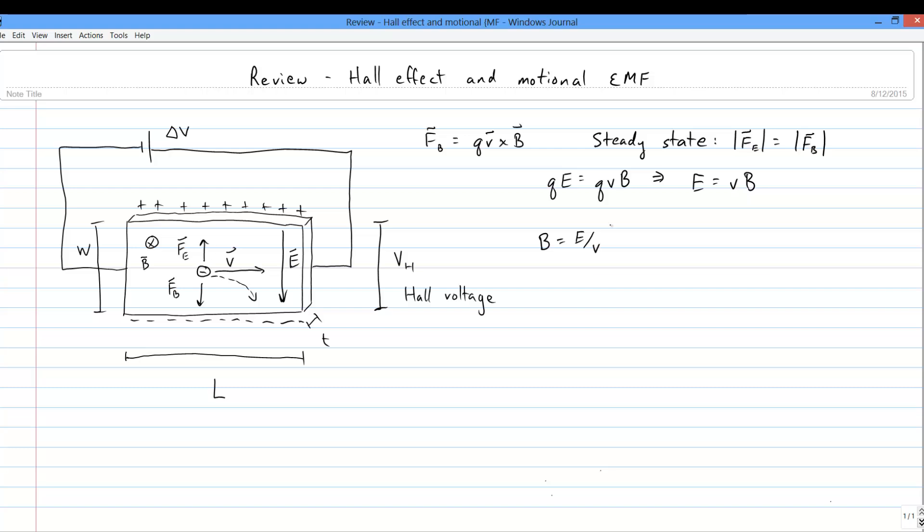E is related to the Hall voltage and to the width of the slab, which is an especially easy relationship if we can assume that everything is pretty uniform. And the drift speed can be written in terms of things like the current density and the density of charge carriers in the particular material.